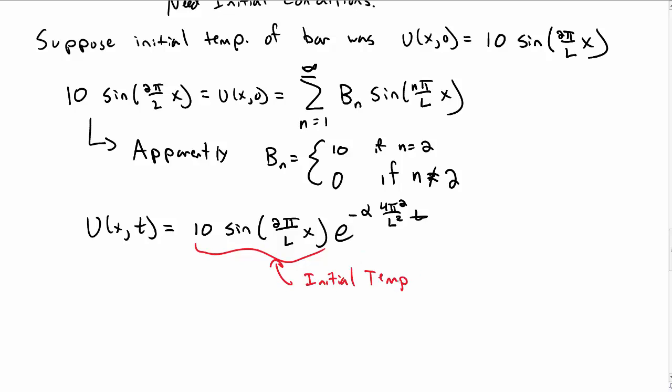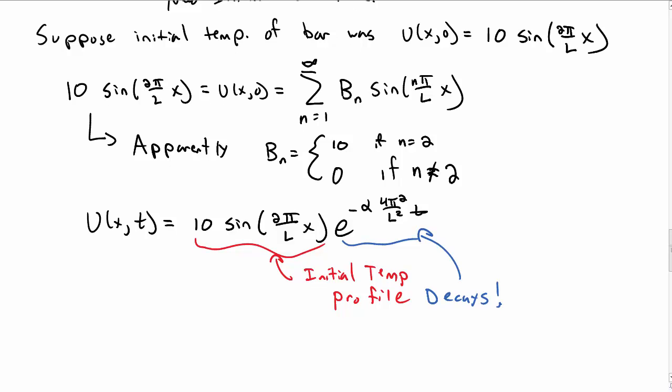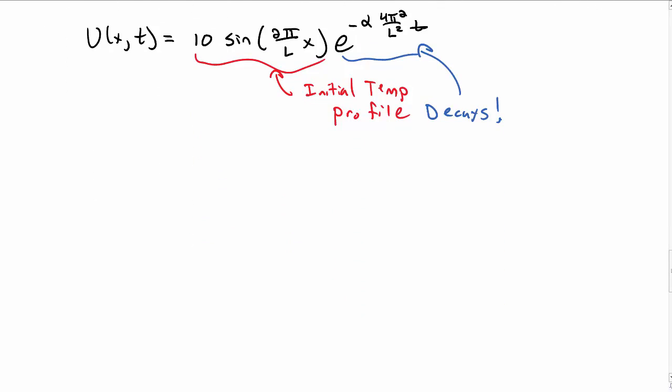And so what this looks like is there's some initial temperature profile here. And over time, that initial temperature profile decays from this exponential decay here. So if I were to graph that, it might look something like this.